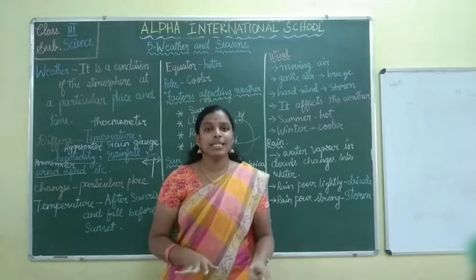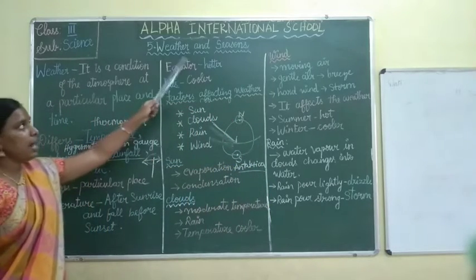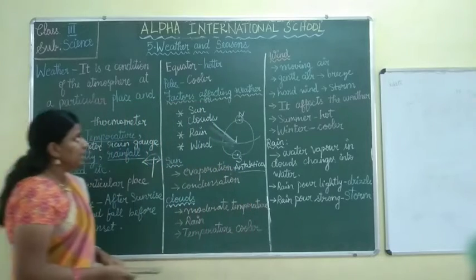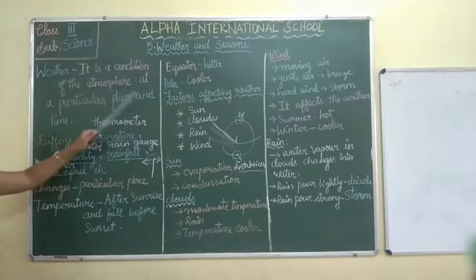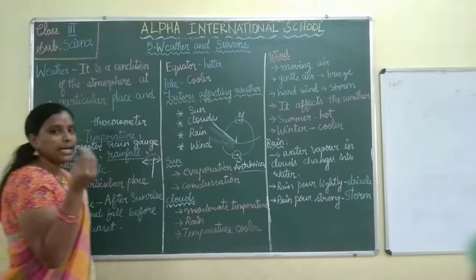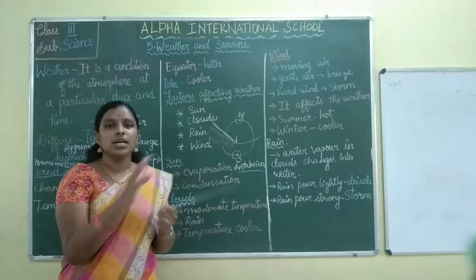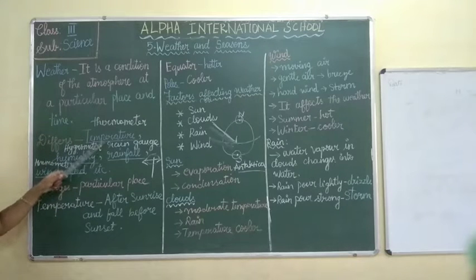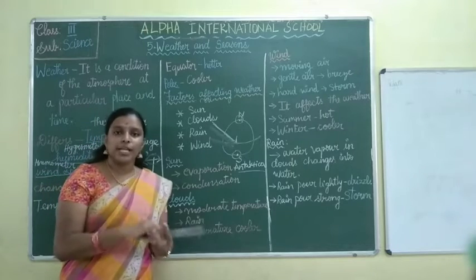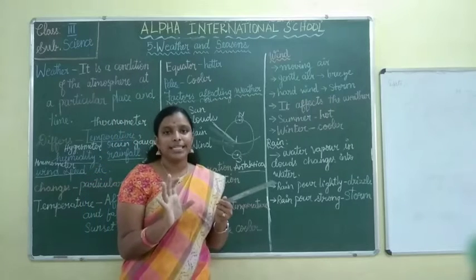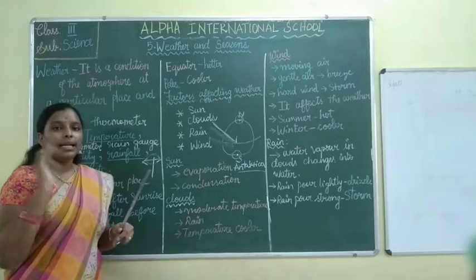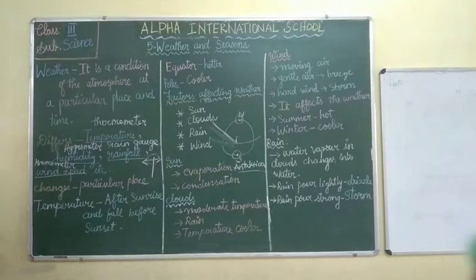Children, can you understand? Once again we will see a recap. The lesson is Weather and Seasons. In this class you are seeing about the weather. What is weather? Weather is the condition of the atmosphere at a particular place and time. It can change from place to place and from time to time. What makes it differ? It can be affected by temperature, humidity, rainfall, and wind speed. Humidity means it is a wet air — a place that is always wet, that is humidity.